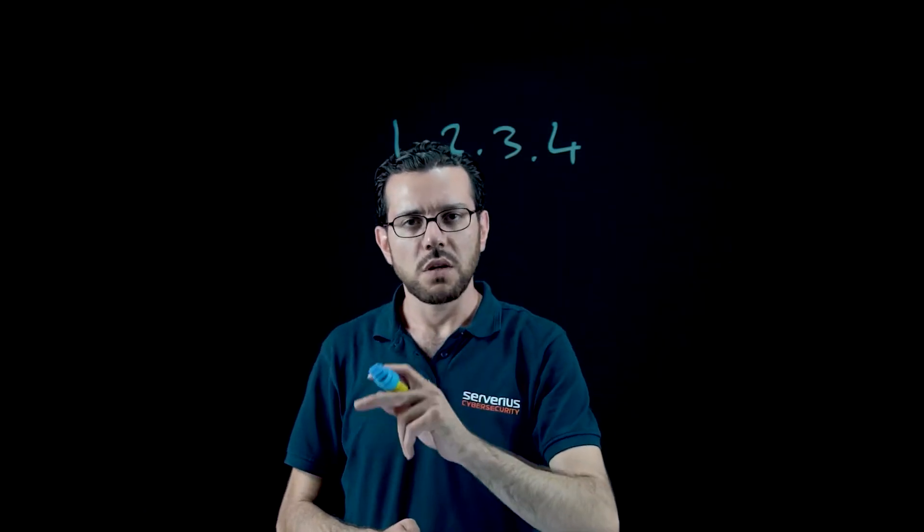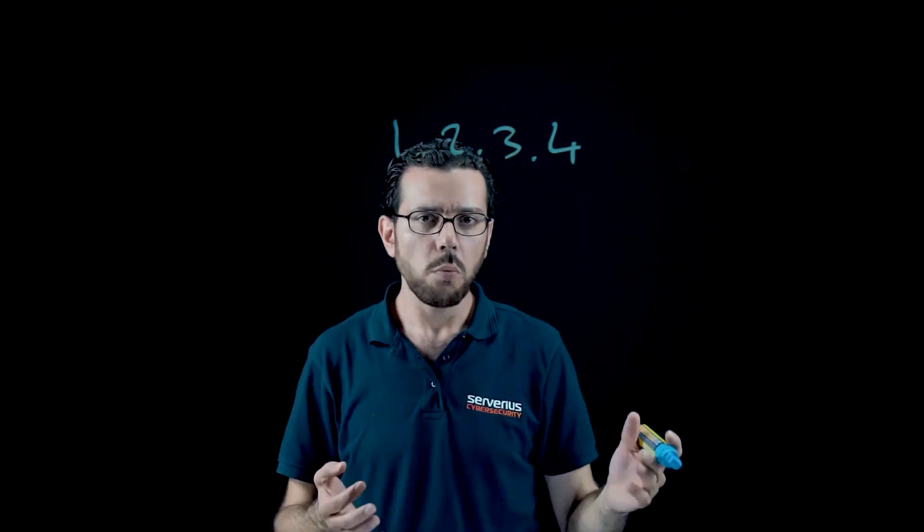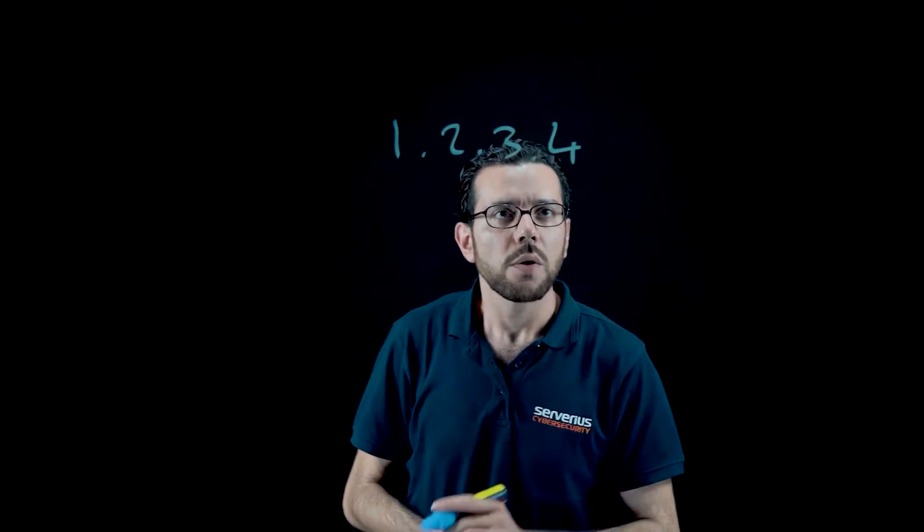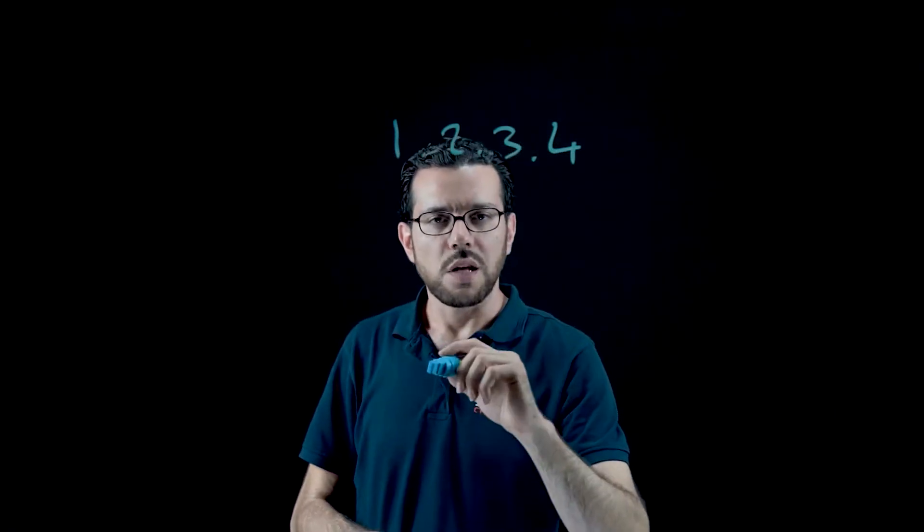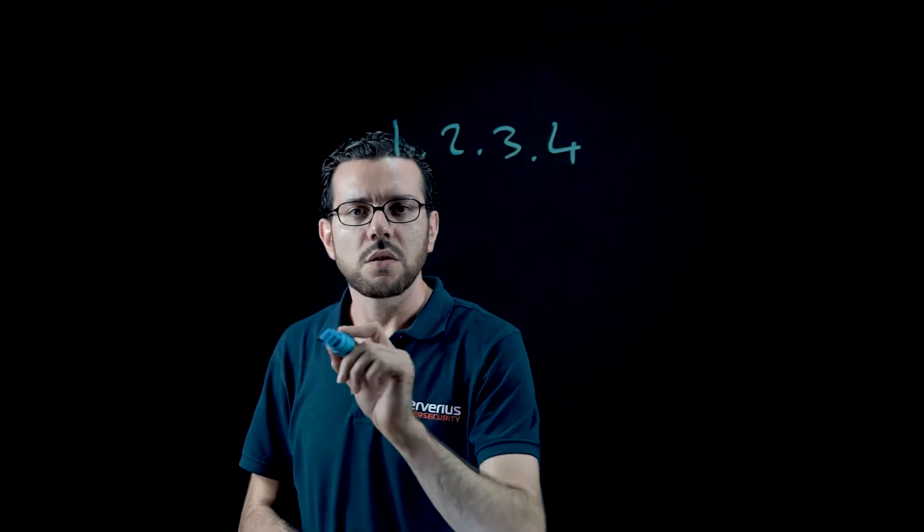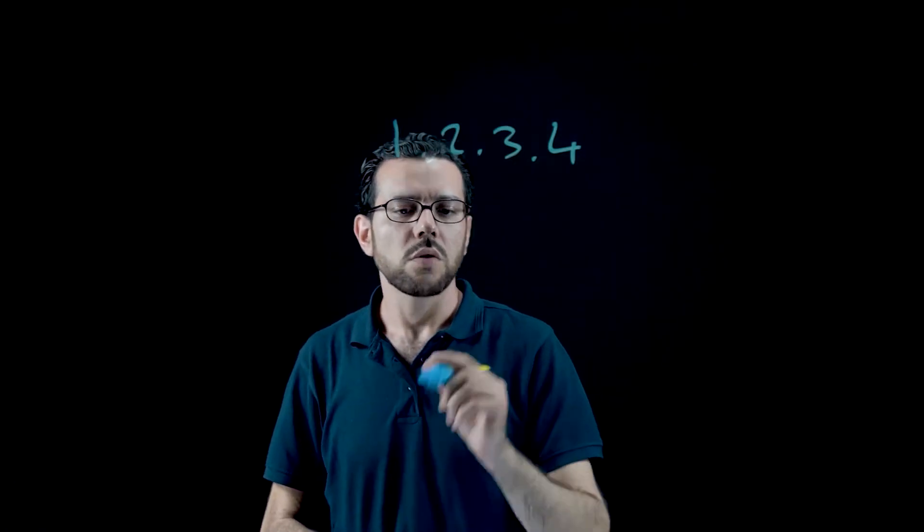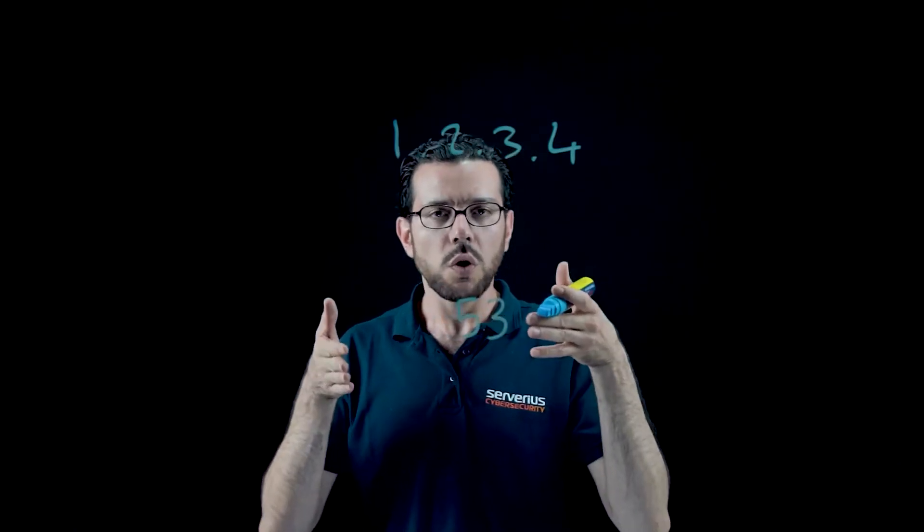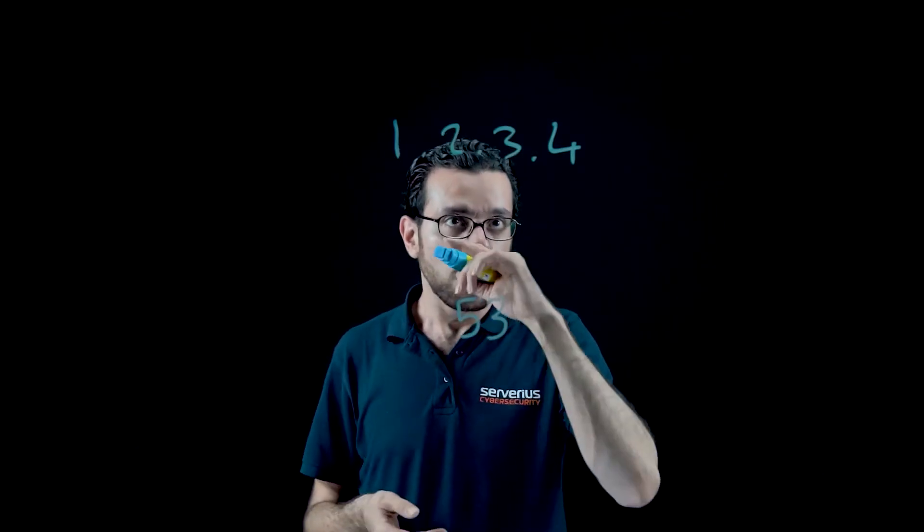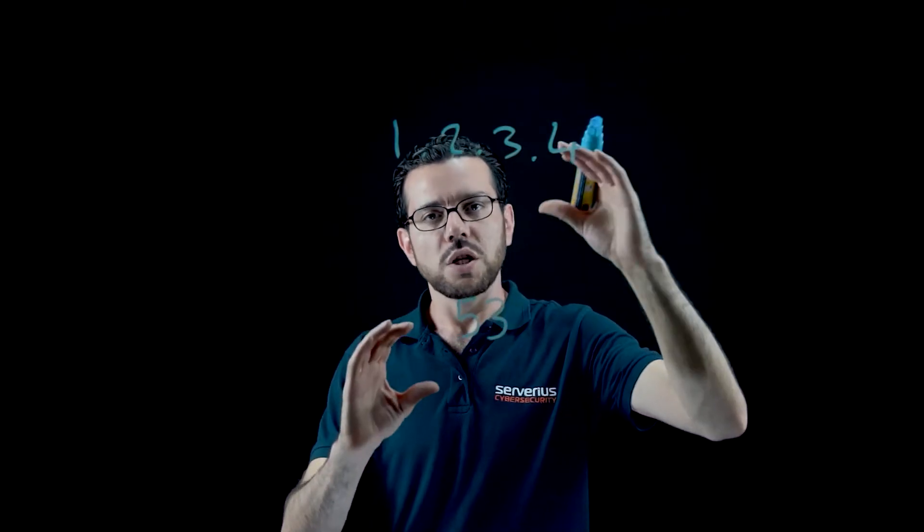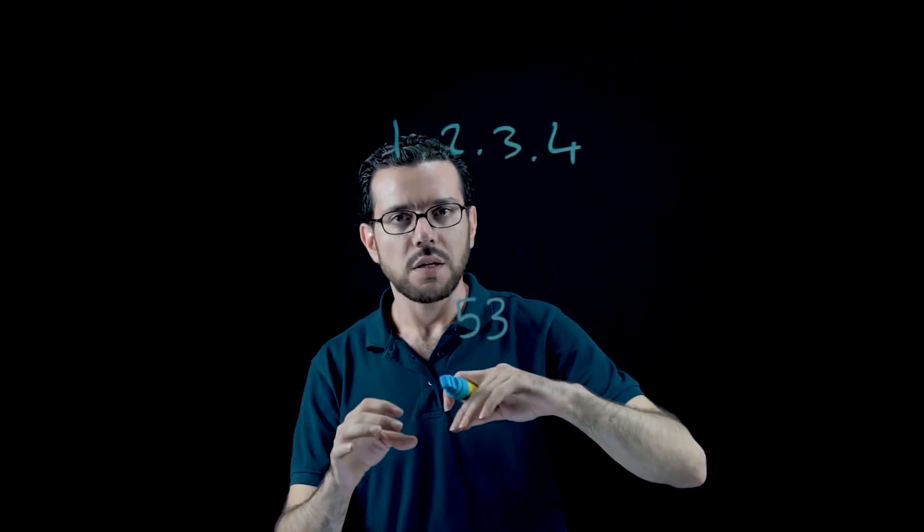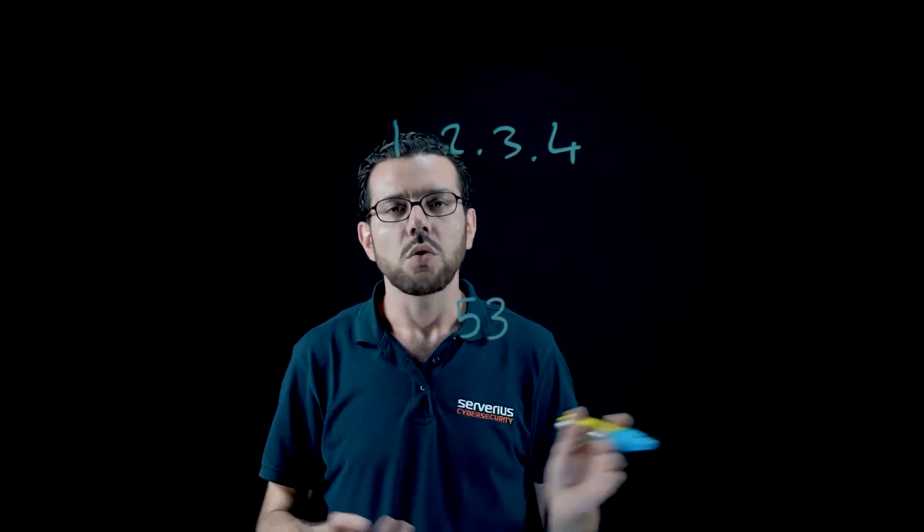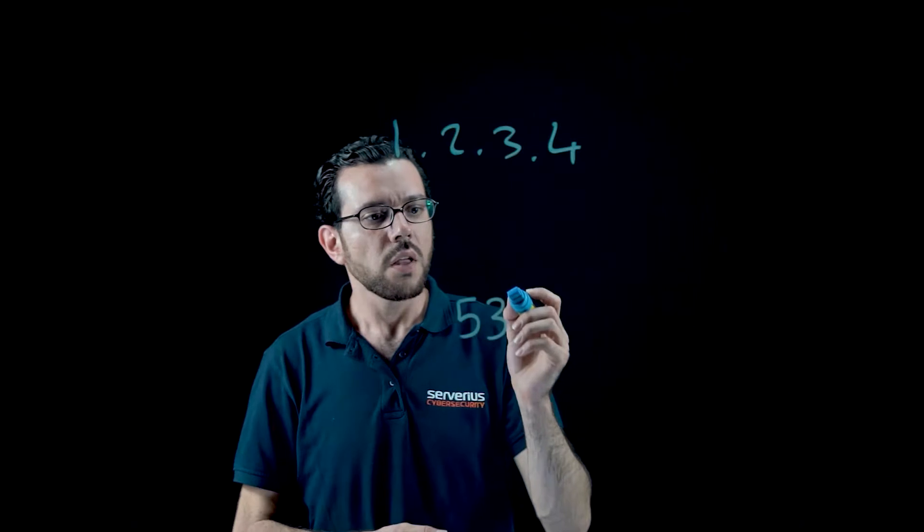Now you have to add in our example the destination port, for example 53. So the system will look also in every packet. When this combination exists in the packet, the packet will be discarded, rate limited, or dropped.